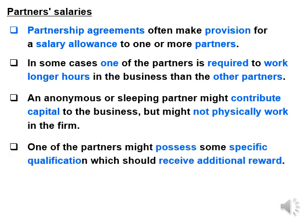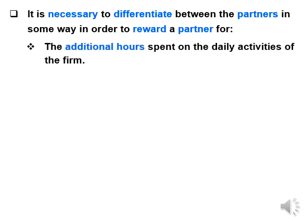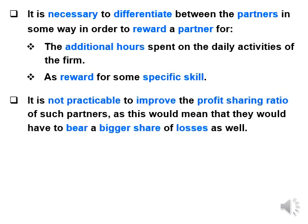One of the partners might possess some specific qualification which should receive additional reward. It is necessary to differentiate between the partners in some way in order to reward the partner either for additional hours spent on the daily activities of the firm, or as a reward for some specific skill. It is not practicable to improve the profit-sharing ratio of such partners, as this would mean that they would have to bear a bigger share of the loss as well.